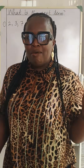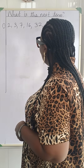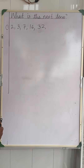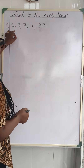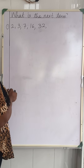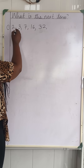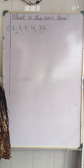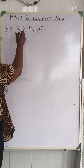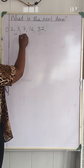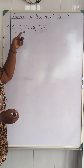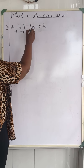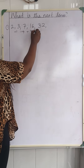Welcome back to our mathematics class. We'll be looking at what is the next term from this sequence on the board: 2, 3, 7, 16, and 32. What's the difference between 2 and 3? That's plus 1. From 3 to 7, the difference is plus 4. From 7 to 16, the difference is plus 9. And from 16 to 32 is plus 16.